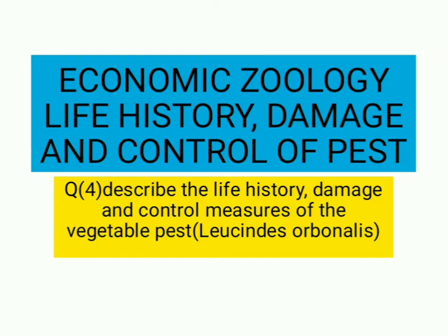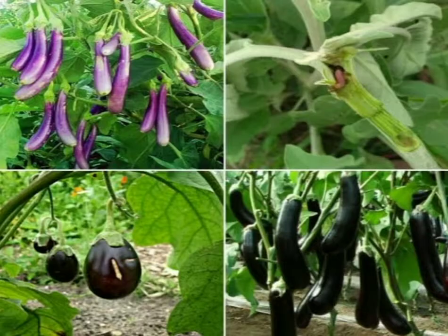Now this is our fourth question: describe the life history, damage and control measures of the vegetable pest, that means Leucinodes orbonalis. This is the picture of this pest.